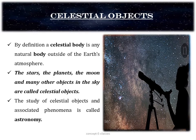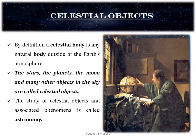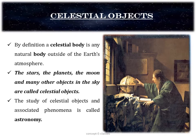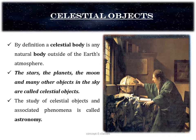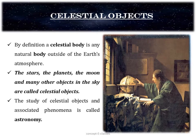The study of celestial objects and associated phenomena is called astronomy. The person who studies astronomy is an astronomer. So let us make some observations of some of the celestial objects and learn about them.